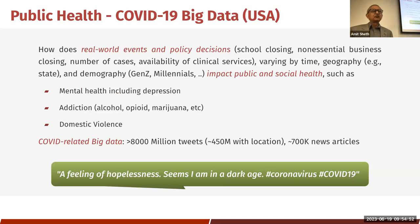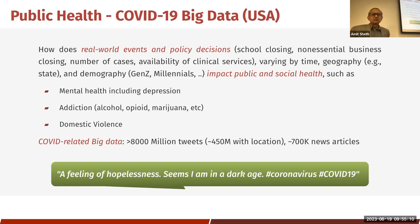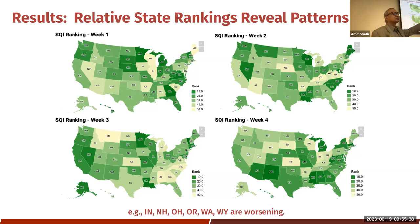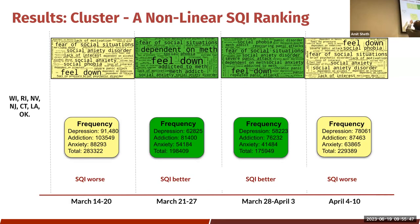During COVID-19 we saw significant increases in mental health issues, addiction, and domestic violence. We gathered eight billion pieces of data from tweets and analyzed them to understand how different states were doing. We developed something called the Social Quality Index — showing which states were doing well or poorly — and tracked how it changed week by week.